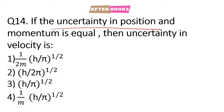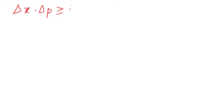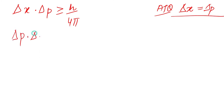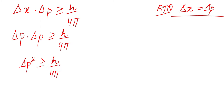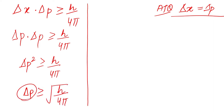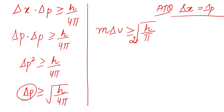Question number 14: If uncertainty in position and uncertainty in momentum are equal, find the uncertainty in velocity. According to Heisenberg's uncertainty principle: Δx · Δp ≥ h / 4π. Since both are equal, replacing Δx with Δp gives Δp² ≥ h / 4π. Taking square root: Δp ≥ √(h / 4π). Since Δp = m·Δv, uncertainty in velocity = (1 / 2m) × √(h / π), which is option number 1.